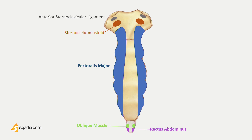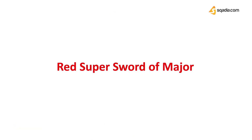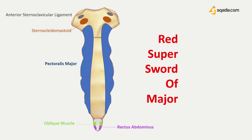This mnemonic would help you recall the muscular attachments anteriorly: 'Red super sword of major.' R stands for rectus abdominis. S stands for sternocleidomastoid.